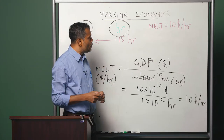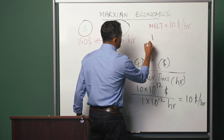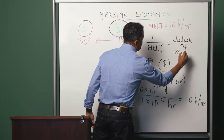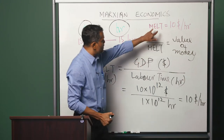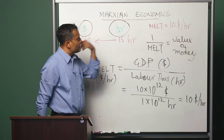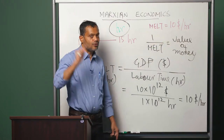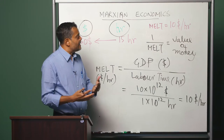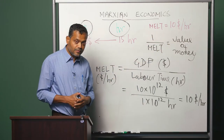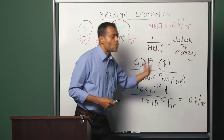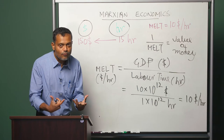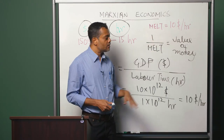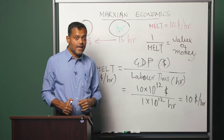The last thing to note is that sometimes we take the reciprocal of the MELT. The reciprocal of the MELT is known as the value of money. The MELT — the monetary expression of labor time — gives us the dollar equivalence of one hour of social labor. We can flip it around and ask: how many hours of labor does one dollar count for? That quantity is the value of money — just the reciprocal of the MELT. For our example, the MELT is 10 dollars per hour, therefore the value of money is 1/10, that is 0.1 hours per dollar.